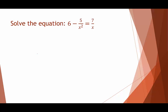In our first worked example, 6 is a whole number, so we write it over 1 to show it's rational. There's nothing to factor in the denominators. The restriction is that x squared cannot be 0, so x cannot equal 0. The least common denominator for the three rational expressions is x squared.